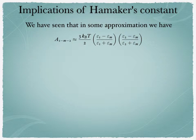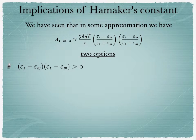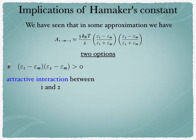This formula is super crucial for the reasons to be explained just now. We have seen that it looks like this, and now there are two possible options. First is that the product (ε1 - εm) with (ε2 - εm) is bigger than 0. If that happens, then the interaction is attractive between 1 and 2, because the Hamaker constant becomes positive and the van der Waals interaction is minus the Hamaker constant and therefore it's attractive.